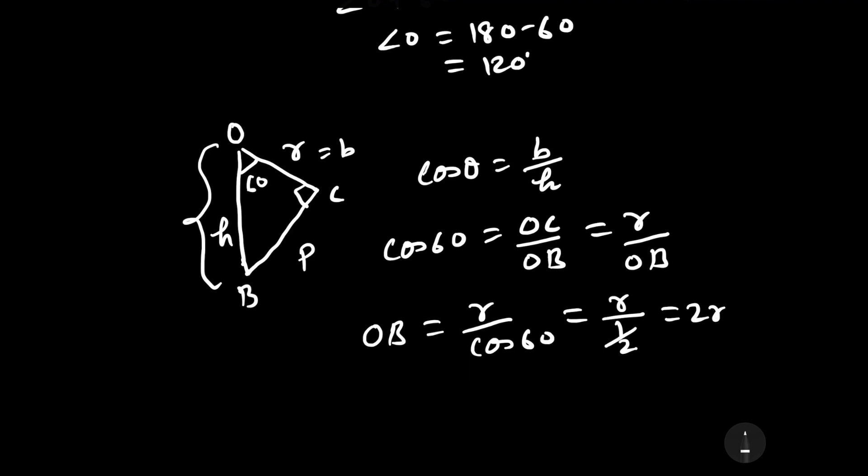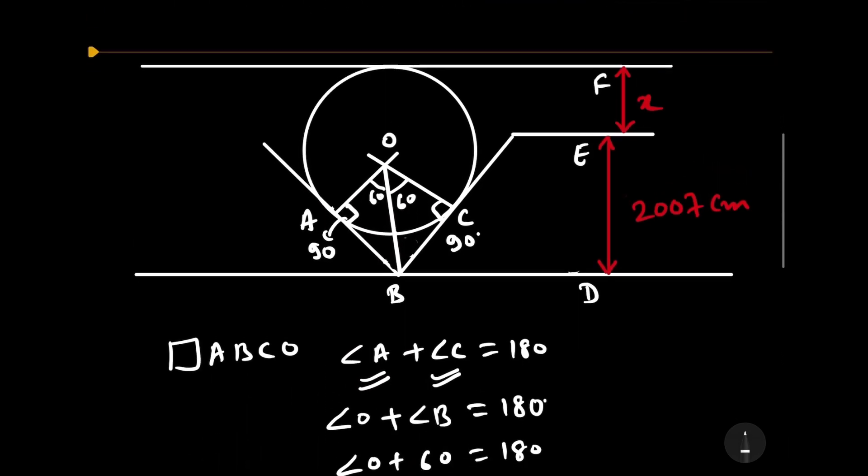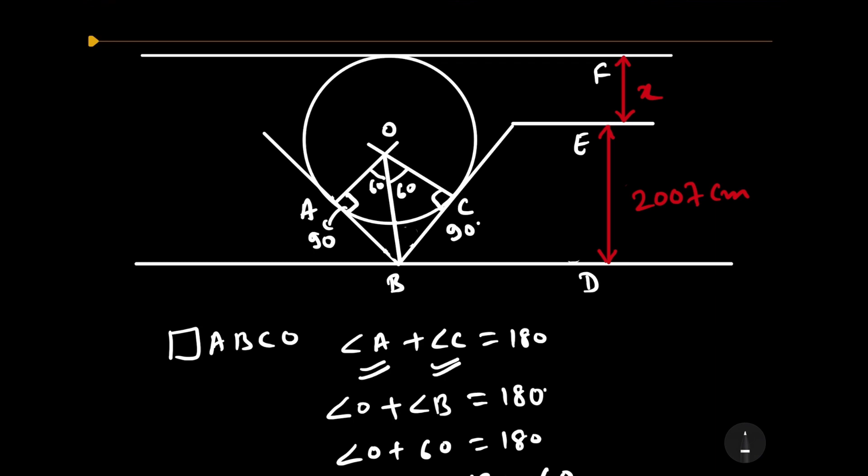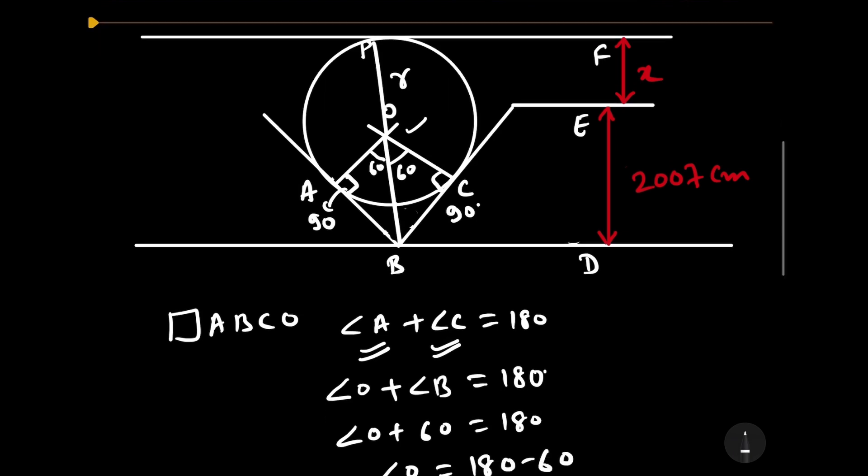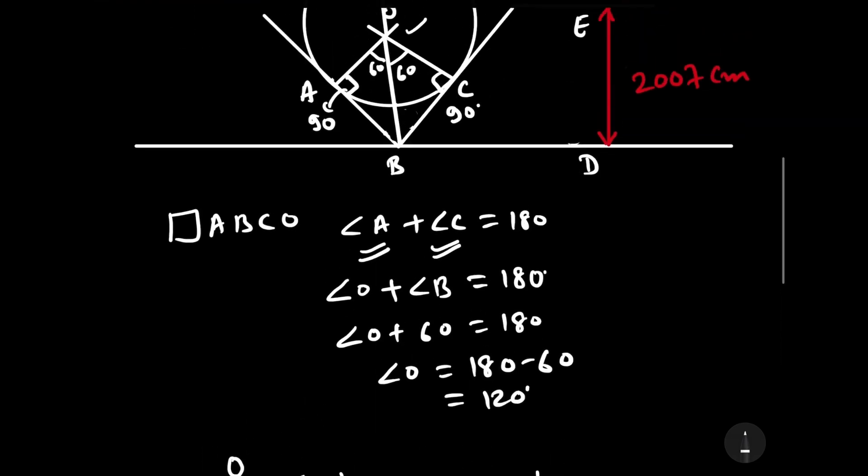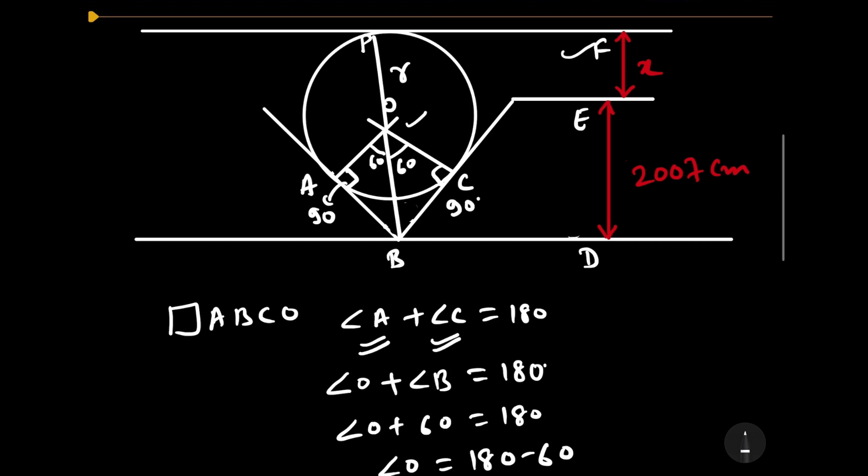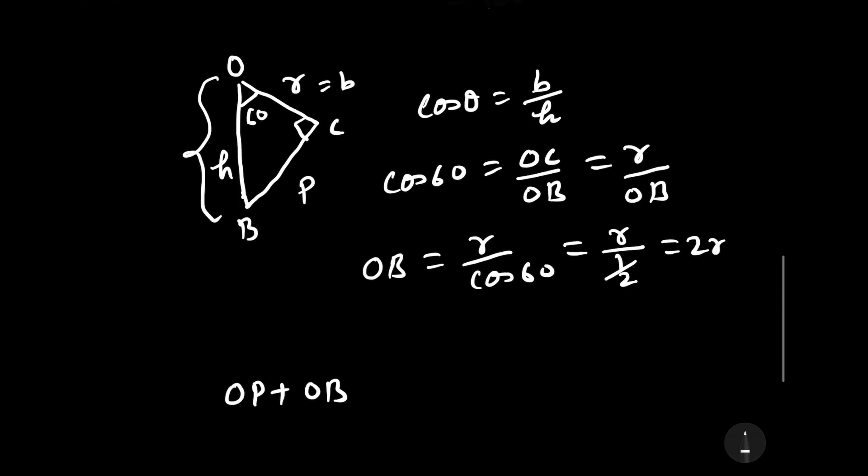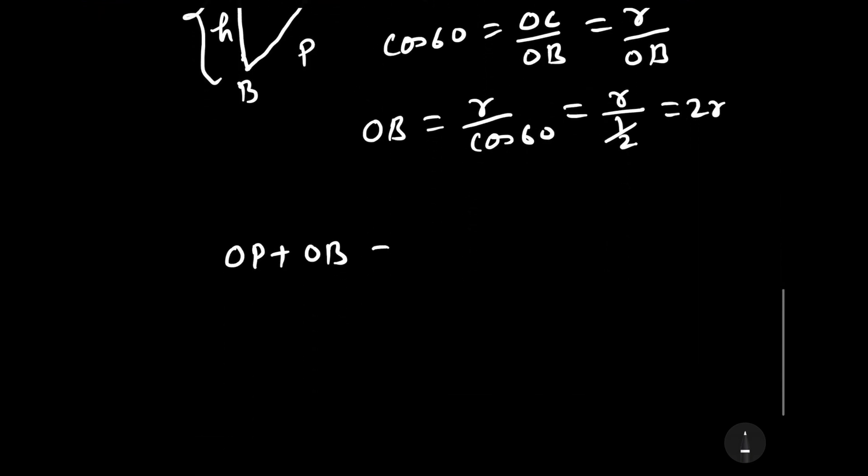Now, from the diagram, we can clearly see that O is the center and if we draw this line, then this will also be equal to radius. Let it meet at point P. Then OP is the radius and OB is equal to 2R. Then OP plus OB must be equal to FE plus ED.